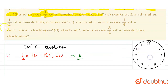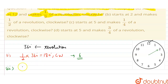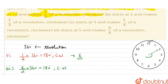Now for the second part: the minute hand starts at 2 and makes half of a revolution. Half of a revolution is again 180 degrees, and it is also clockwise.